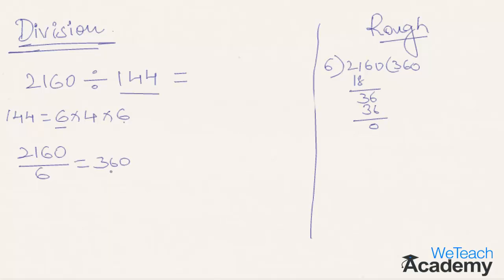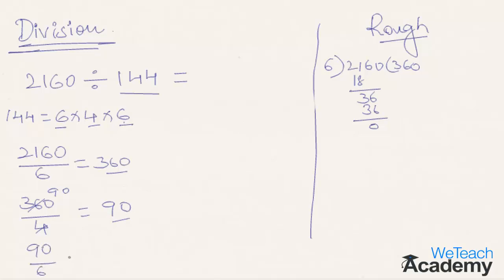Now take the next factor, that is 4. So 360 divided by 4 — 9 times 4 is 36, so 90 is the result for 360 divided by 4. That was simple. Now the result 90 is to be divided by the third factor, that is 6. So 90 divided by 6 we get 15 — 15 times 6 is 90. So the final result for 2160 divided by 144 is 15.